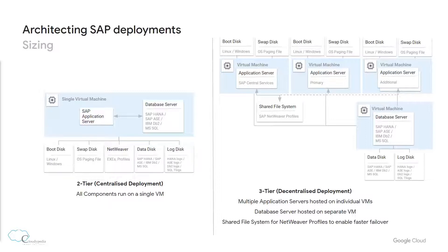First, the sizing of the SAP deployment. This diagram shows a comparison between the structure of a two-tier and a three-tier deployment. For the two-tier deployment, all components of the system run on a single VM — both the SAP application server and the database server are hosted on the same VM. Whereas in a three-tier deployment, each of the NetWeaver application servers and the database server runs on a separate VM.